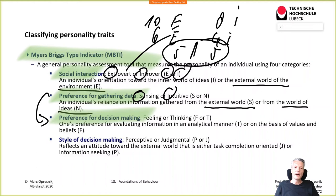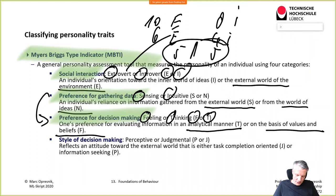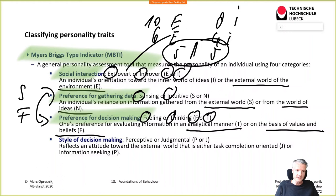The third dimension — preference for decision making — is usually closely related to the preference for gathering data. Is it more on the feeling side or more on the thinking side? You type F for feeling or T for thinking. This reflects whether one's preference for evaluating information is more rational, analytical, and logical, or more based on values and feelings. Usually, if you're more the sensing type, you tend to also be the thinking type, but it is also possible to be SF.